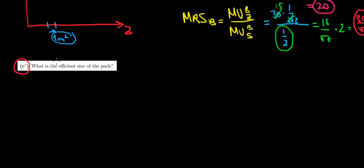Let's solve question C now. What is the efficient size of the park? Now recall from micro, the first course of micro.